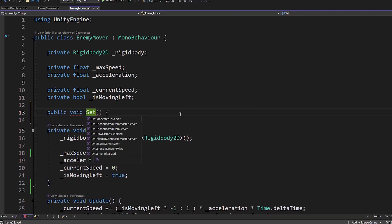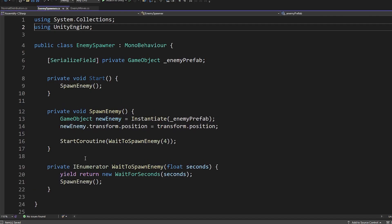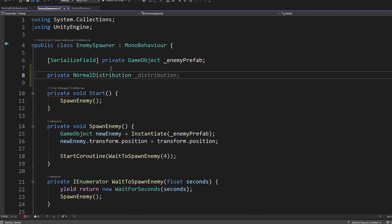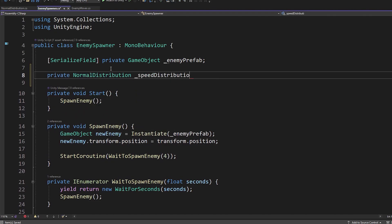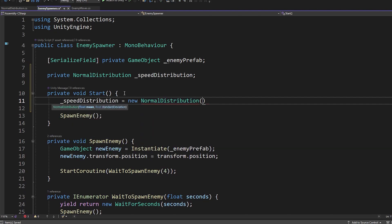Next, I'm going to go into our enemy mover class and make a function that lets us set our max speed. Next up, we're going to go into our enemy spawner script and make a private normal distribution called speed distribution. In the start function, we'll initialize the speed distribution to equal a new normal distribution with 4 and 0.75 passed in as arguments. Here, we set up the mean and standard deviation right away.